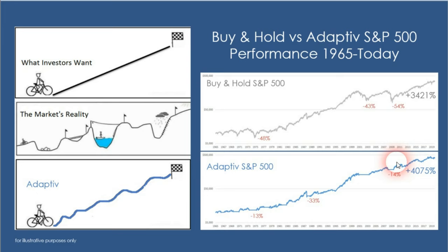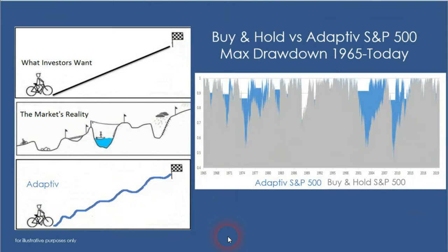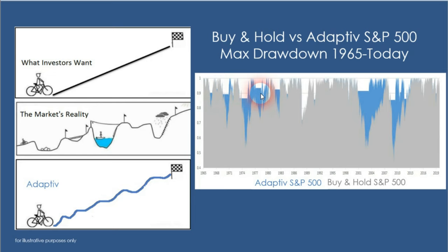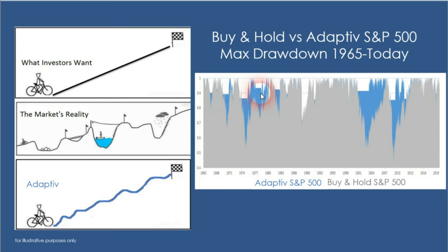The adaptive system over long periods outperforms and reduces volatility. Looking at drawdowns — from a high to a low — the gray line is buy-and-hold S&P 500: a 48% drawdown in 1974, steep corrections in the early 2000s, and 2008. In blue is where adaptive fills in, preventing that further drawdown. There's still drawdown, but not to the degree of the overall market. It smooths things out over time.